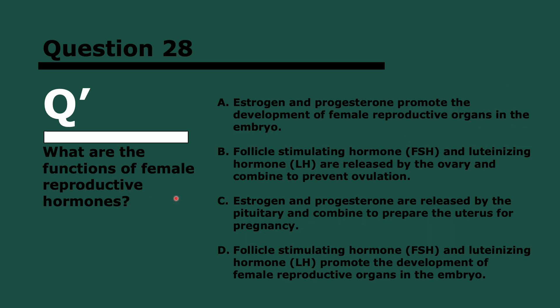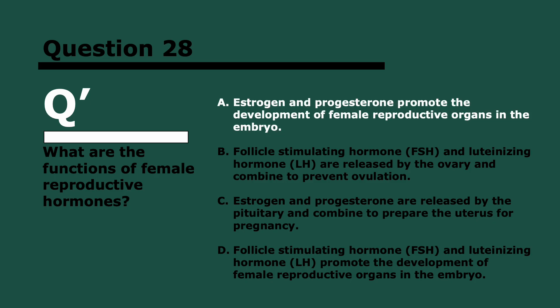Question 28. What are the functions of female reproductive hormones? Three, two, and one. I find this topic really difficult personally. It's estrogen and progesterone promote the development of female reproductive organs in the embryo. B is wrong because FSH and LH are not produced by the ovary, they're produced by the pituitary gland. C is wrong because estrogen and progesterone are released by the ovary and not the pituitary gland. D is false because FSH and LH do not promote the development of female reproductive organs in the embryo. What they do is they promote estrogen production, which does that.